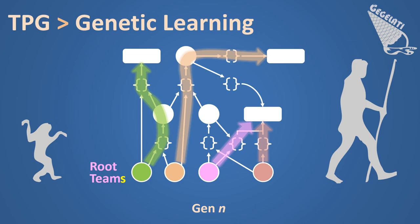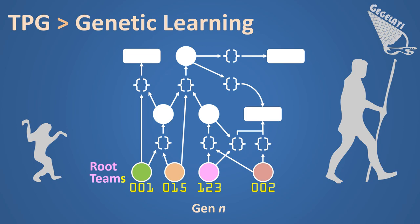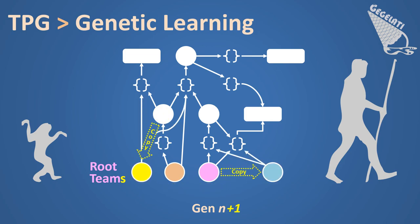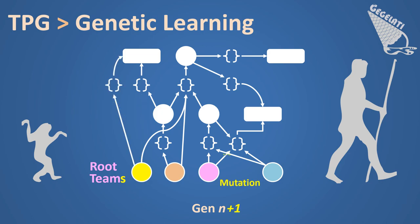During each generation, the performance of the AI starting from each of these roots is evaluated separately within the learning environment. To create the graph for the next generation, the root vertices with the worst performance are identified and deleted from the graph. Then, new root vertices are created for the new generation by copying randomly selected teams and their outgoing edges. The new roots then undergo a random mutation process altering some of their outgoing edges, thus creating a new original behavior. As a result of this mutation process, some roots of the previous generation may become an internal node of the graph.